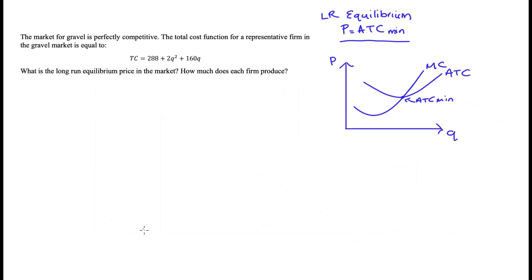Let's just work with our total cost function. We need to find average total cost; that's just going to be total cost divided by quantity. So just substituting in, we have 288 plus 2 times q squared plus 160q, divided by q. And that's equal to—I'm just going to separate them out because it will help us later—so 2q squared divided by q is just 2q, right, and then 160q, that q will divide out.